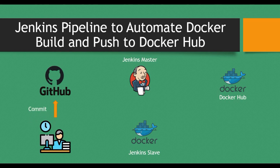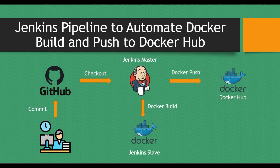The whole process will be like: you commit changes to GitHub, then using Jenkins we check out the code from GitHub. That code is used in Jenkins for building the Docker image — we'll have a Dockerfile, use the docker build command to create the image, and that image will be pushed to Docker Hub using our Jenkins pipeline. We'll have Docker login happening and then push the image to Docker Hub.